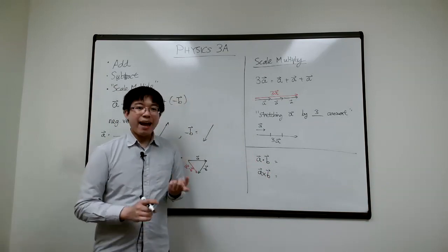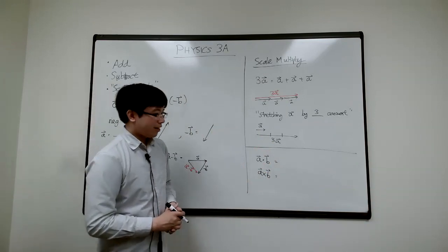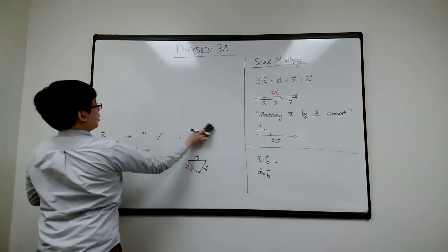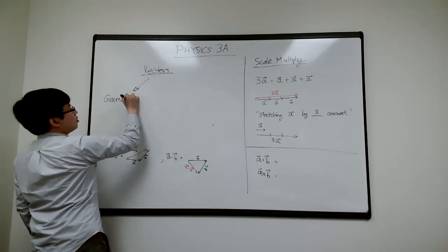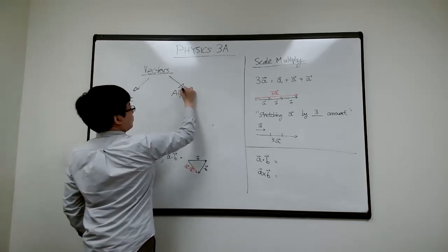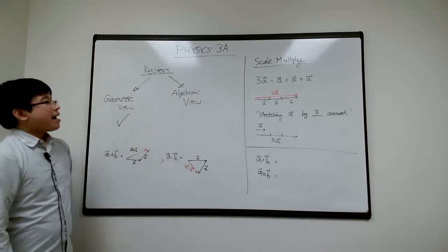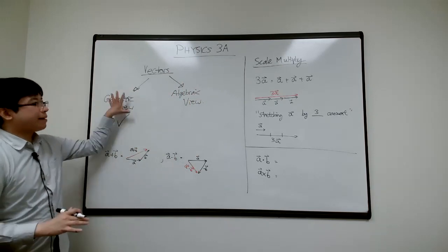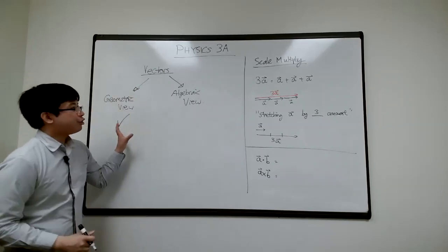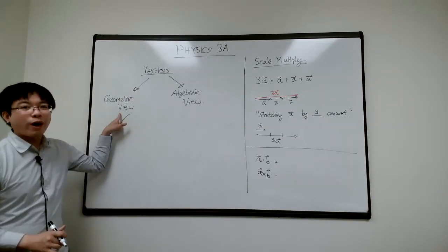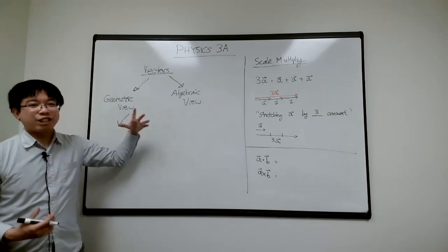Another question: is there a better way to do this than all the drawing? Yes — there are two ways to approach vectors: the geometric view and the algebraic view. Today we covered the geometric view. A lot of books skip that and go directly to algebra, which looks confusing and abstract. Hopefully this shows you that vectors are just arrows and you can in principle do everything by drawing.